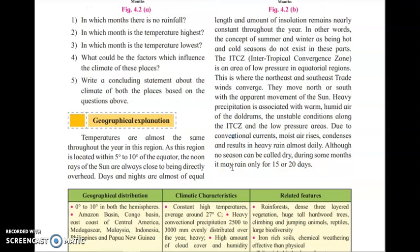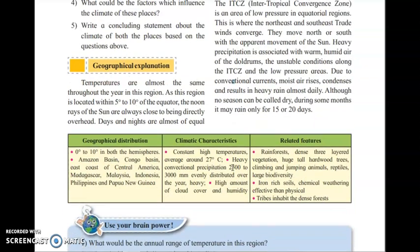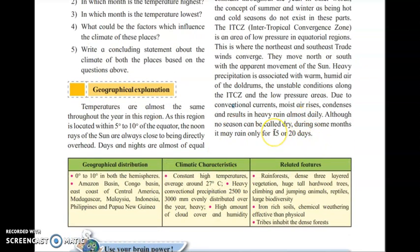Although there are no seasons, some months can be called relatively dry, where it may rain for only 15 to 20 days. In summary, the latitudinal extension of the equatorial rainforest covers 5 to 10 degrees north and south of the equator.